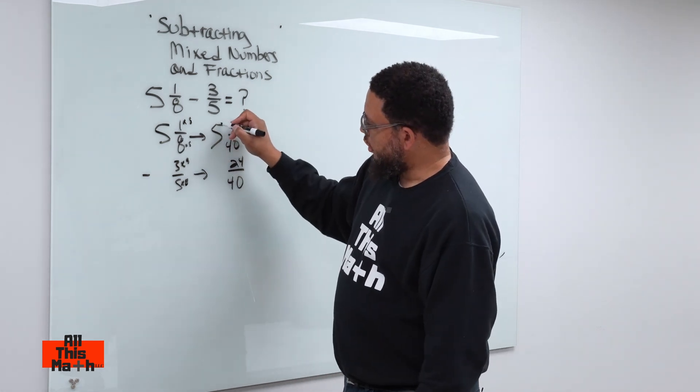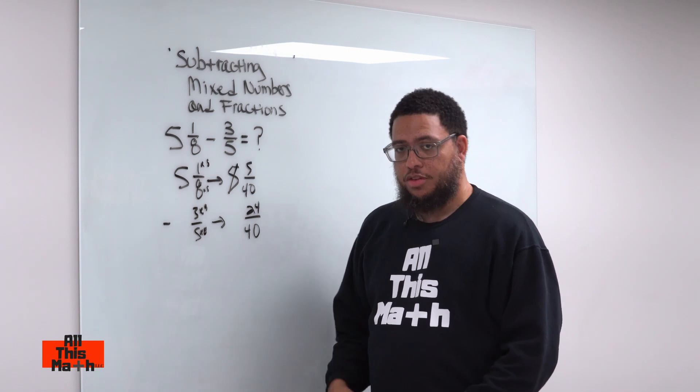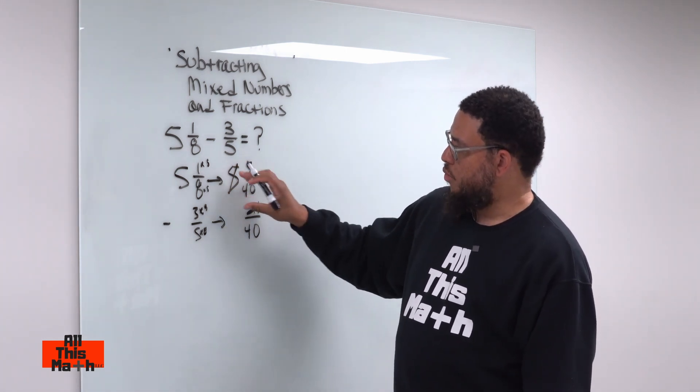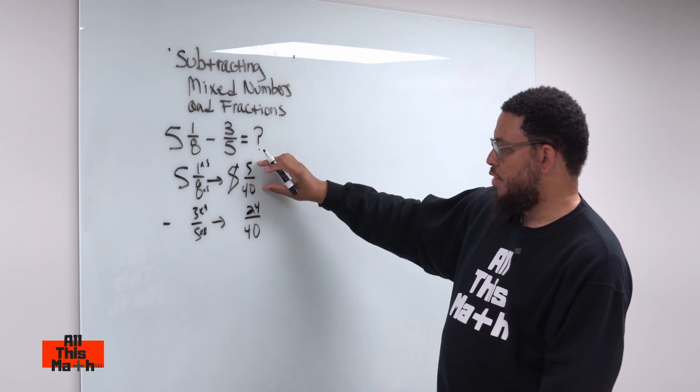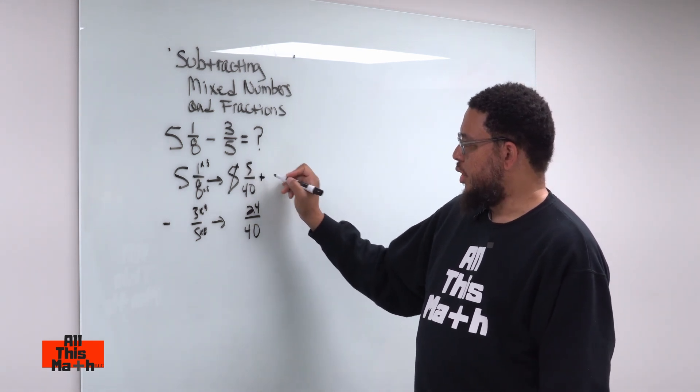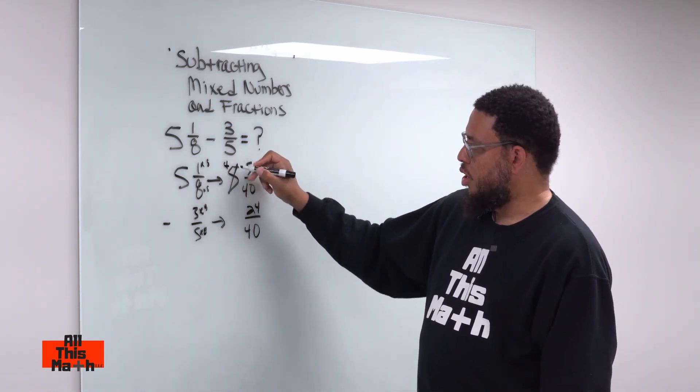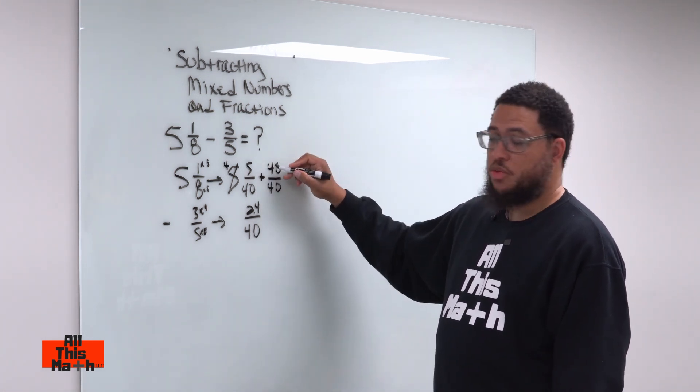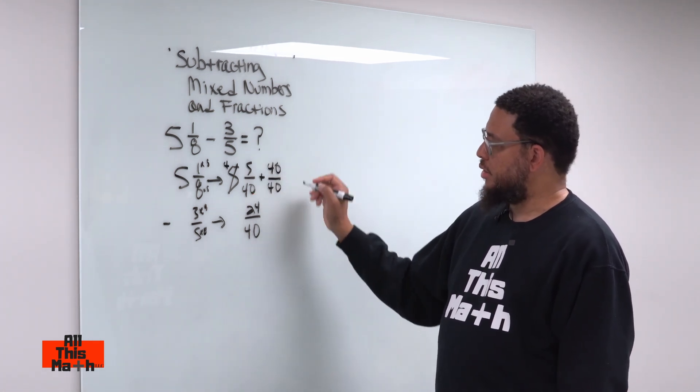We got to borrow from this whole number five. It's kind of like taking money from your right pocket and putting it into the left pocket because you're going to take one whole from the five and add it to the five fortieths. So, we're going to change this to a four because we're borrowing from it, and we're going to add a fraction that's the same value as one, which is 40 over 40 because your denominator's got to be the same.